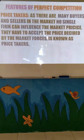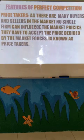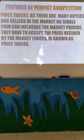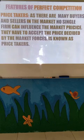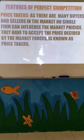Next, we are going to see the features of perfect competition. The first feature is price takers. This is one of the most important features. As there are many buyers and sellers in the market, no single firm, buyer, or seller can influence the market price. They have to accept the price decided by the market forces — this is known as price takers. Prices in perfect competition are decided by market forces, and no single firm has any influence on them.